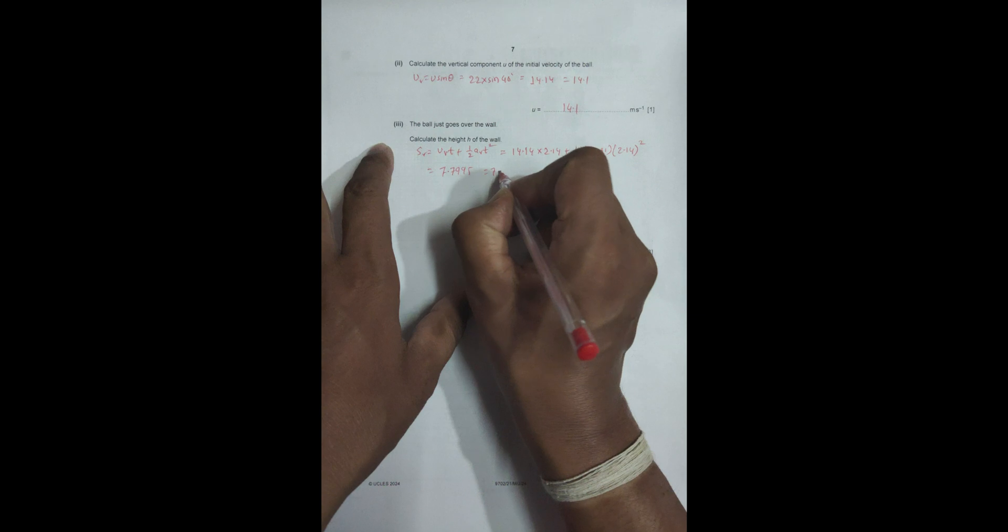It will give us 14.14 into 2.14 minus 0.5 into 9.81 into 2.14 squared. This comes to be 7.7995, equal to 7.8 meters. So this height is 7.8 meters.